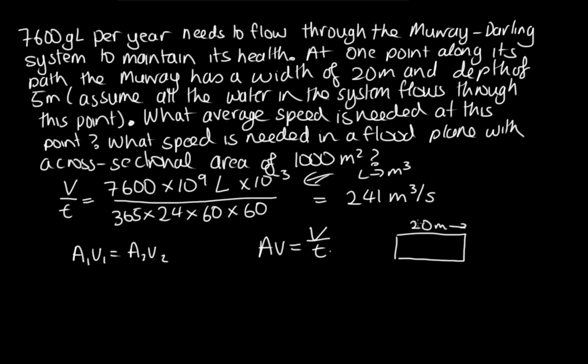So there's 20 meters. Here's 5 meters. So the cross-sectional area A is equal to 20 times 5. And so that's equal to 100 meters squared. And so we can get the speed. We've got Av is equal to 241. And A is 100 times the speed. And so the speed is equal to 2.41. And that's in meters per second. So that is a fairly fast speed for a river to flow, as we would expect if all the water in the Murray Darling was concentrated into such a small area.